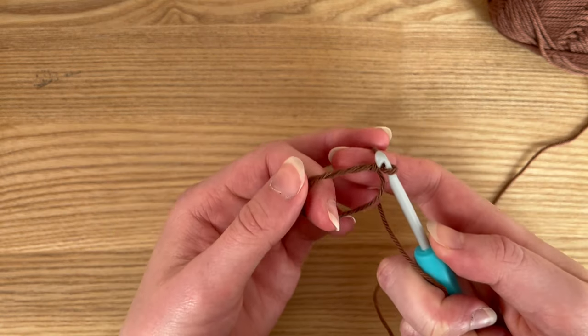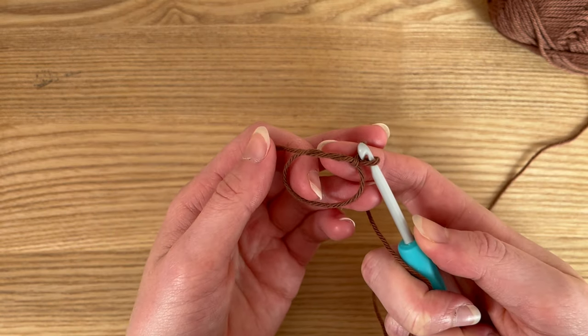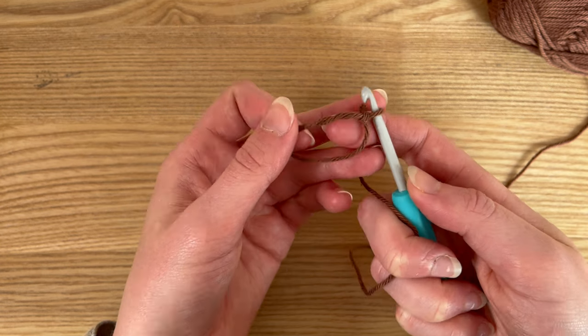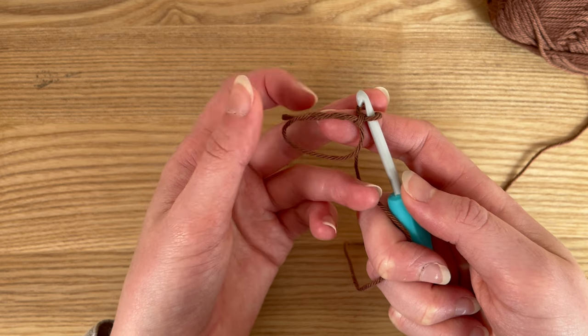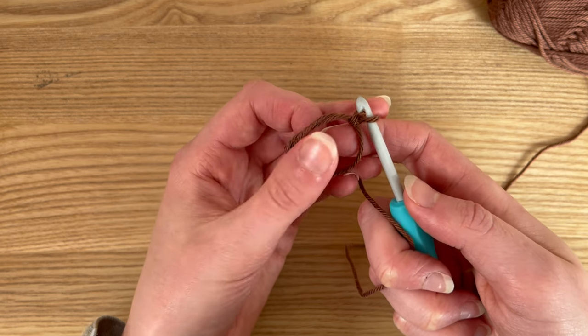Now take your fingers out and see you have a circle. This is what we call the adjustable ring. In your pattern it will tell you how many UK double crochets to do into this ring. In my example I'm going to do five.